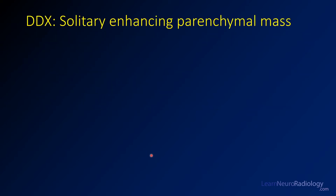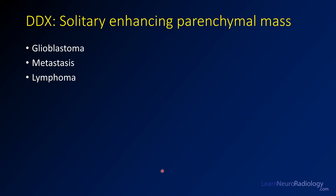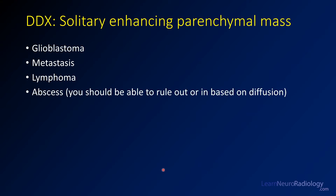This is a solitary enhancing parenchymal mass. In this case, you have a solitary nodule in the right frontal-parietal region or posterior frontal lobe. When you have that, you need to think about a specific differential diagnosis. You want to include GBM — glioblastoma is probably going to be one of your first thoughts, particularly in an older patient. Metastatic disease is definitely a major consideration. Lymphoma, while it's more typical to have multifocal disease or involvement of the subependymal surfaces and basal ganglia, can definitely present with a single solitary nodule.